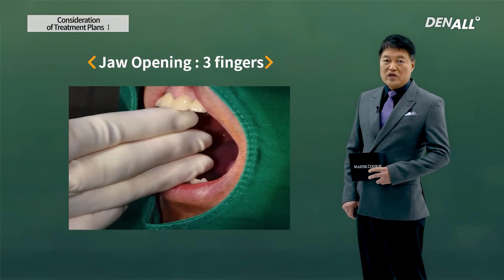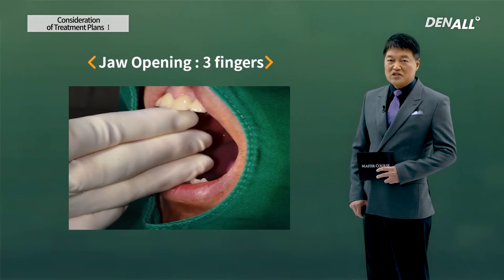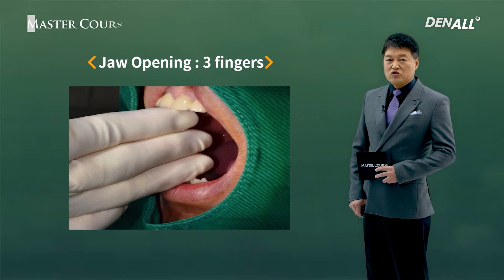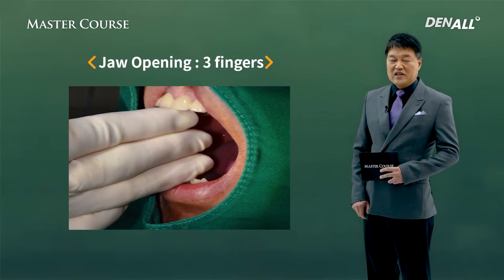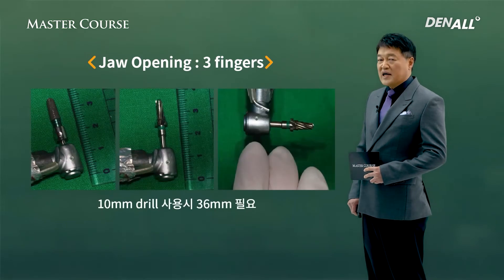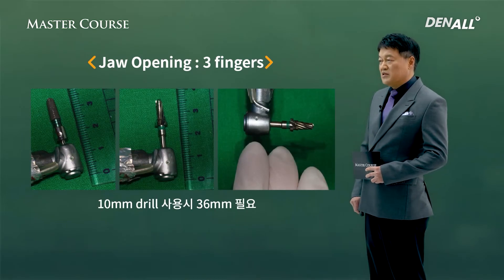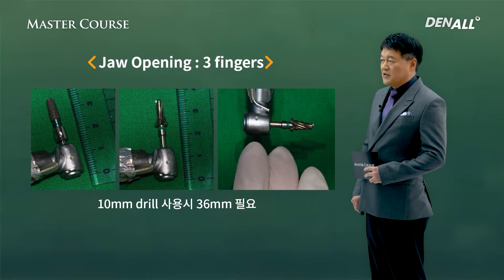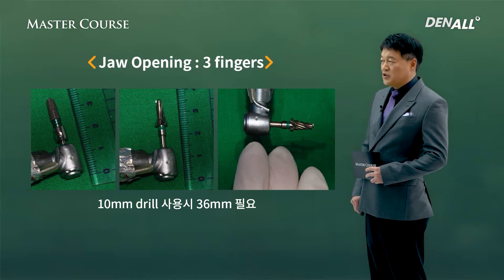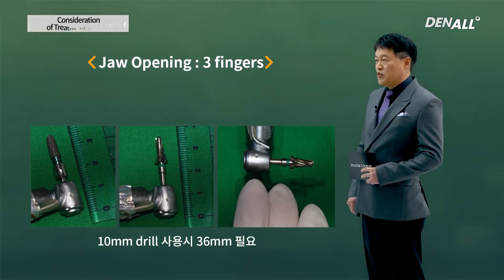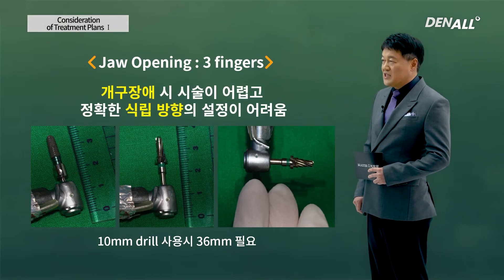Another item to check for adequate surgery is whether the patient's mouth opens well. Three-finger tests should be done — if three fingers can go in without difficulty, there is no obstacle in proceeding with surgery. We use a 10 mm drill a lot, so the patient needs to open by 36 mm. If not, procedures can be difficult and getting accurate placement direction can be problematic.